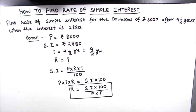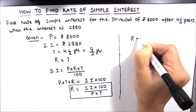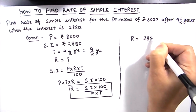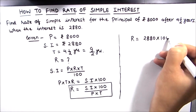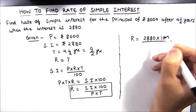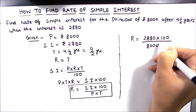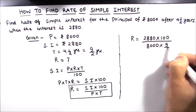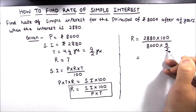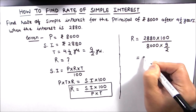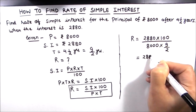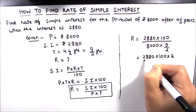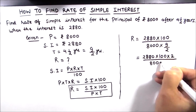Now we will substitute the values. Rate of interest = Simple Interest (2880) × 100 ÷ Principal (8000) × Time (9/2 years). Since time is 9/2, the 2 is transferred to the numerator, giving us: 2880 × 100 × 2 ÷ (8000 × 9).